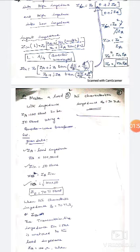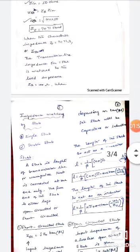Go to page number 516. Impedance matching by stub. Single stub matching, double stub matching. What do you mean by stub? A stub is length of transmission line or waveguide that is connected at one end only. The free end of the stub is either left open circuited or short circuited.